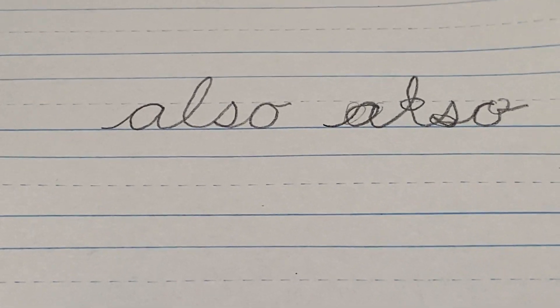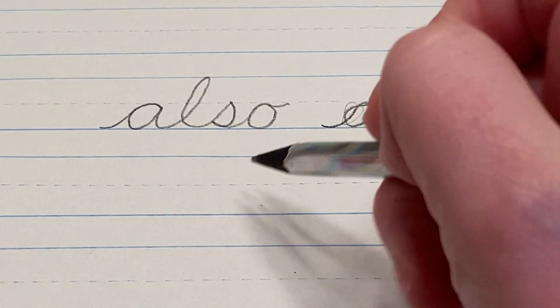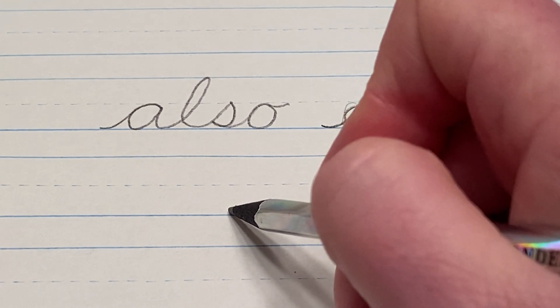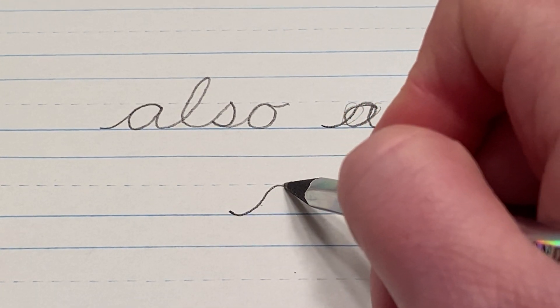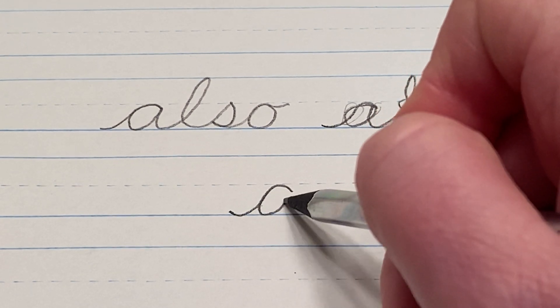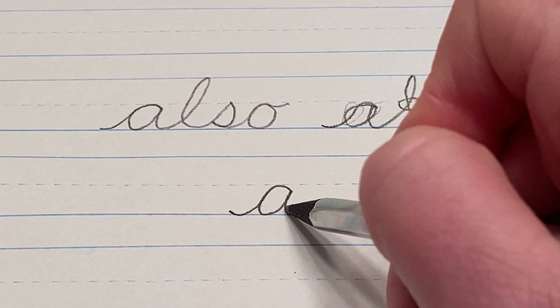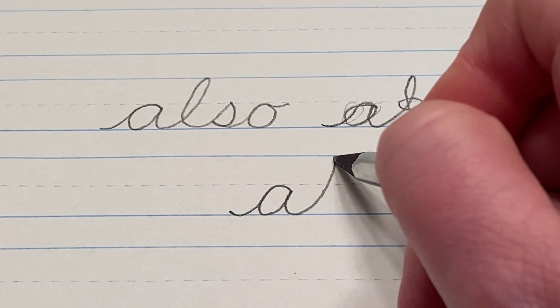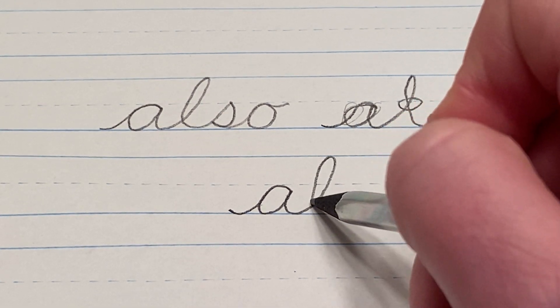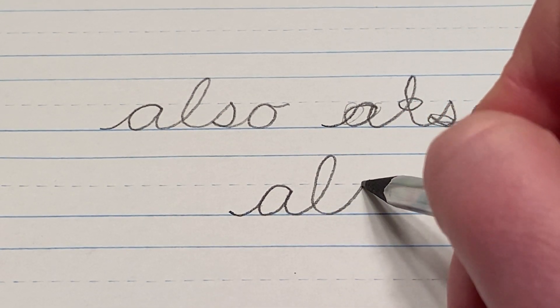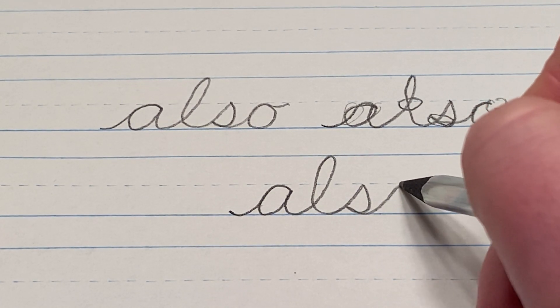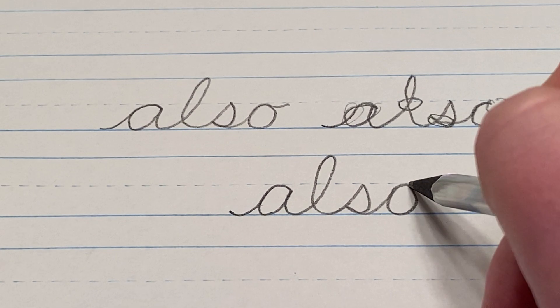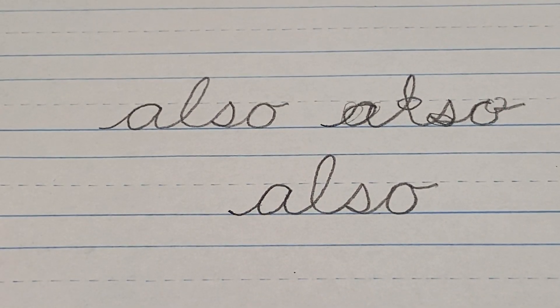Let's try one more time taking our time and see if we can do it correctly. So this one, you start at the floor, go up to the middle, back around, up, and go straight into the L, which goes all the way up, crosses, S, go to the back, and then straight into the O. And you've got ALSO.